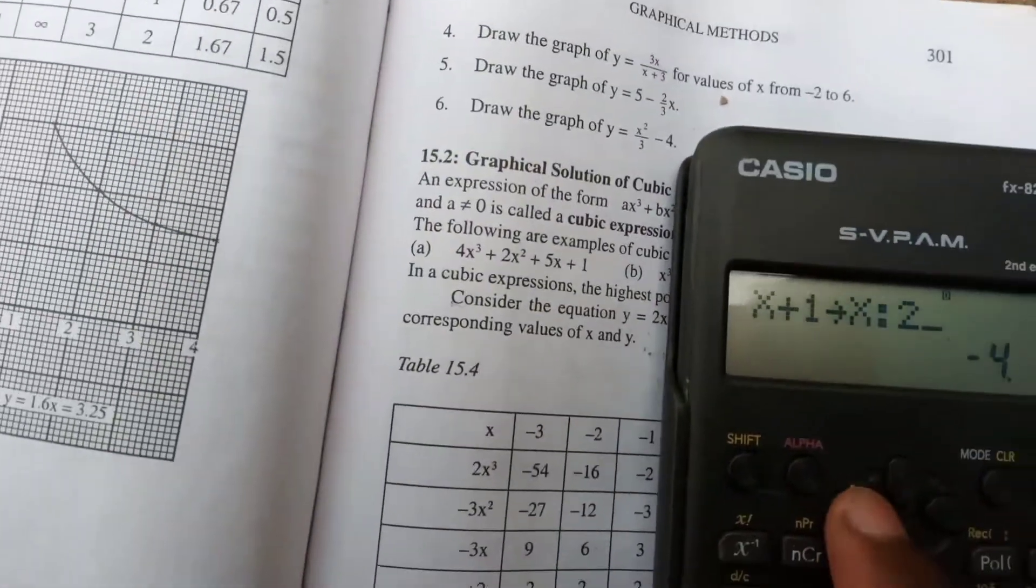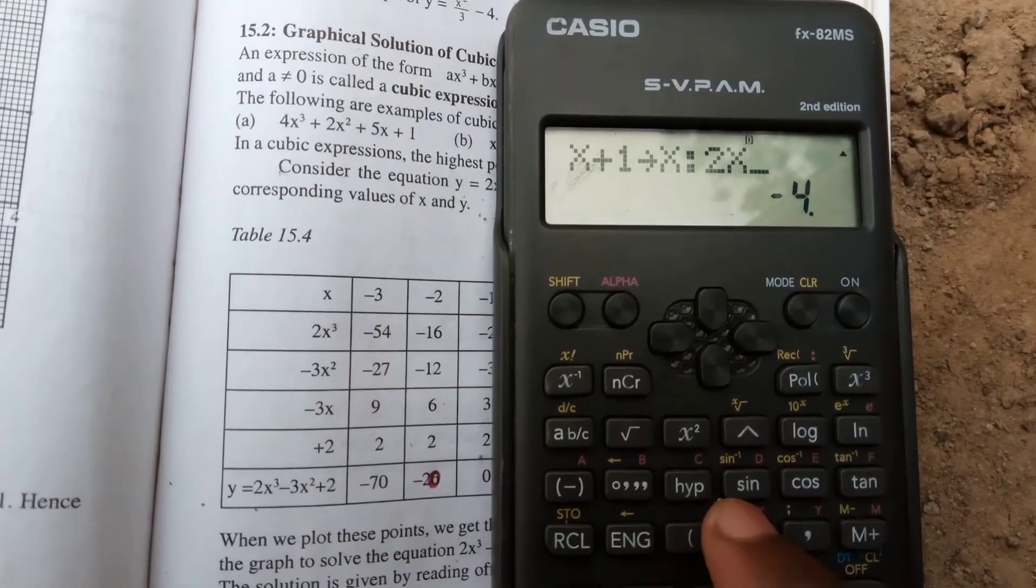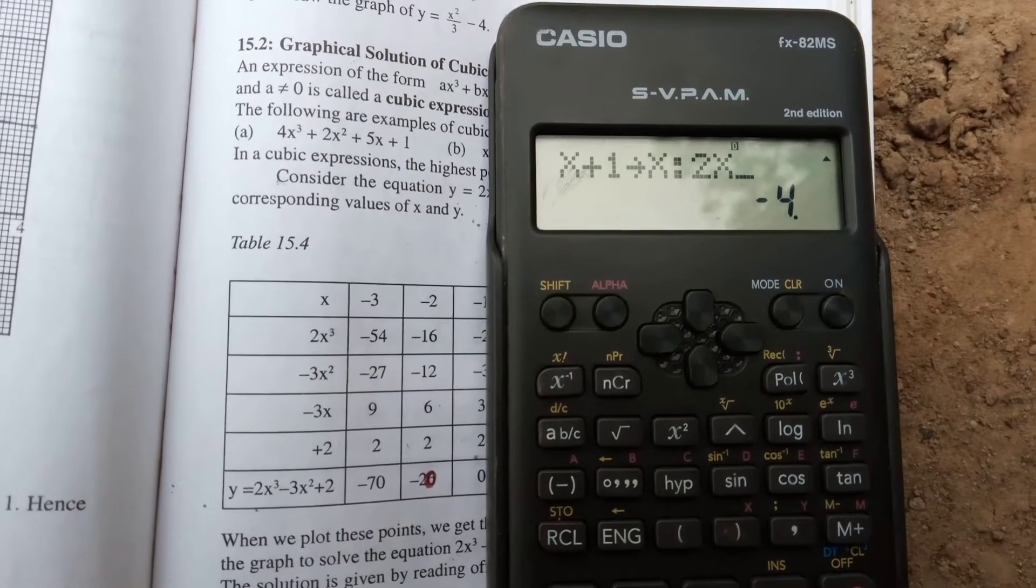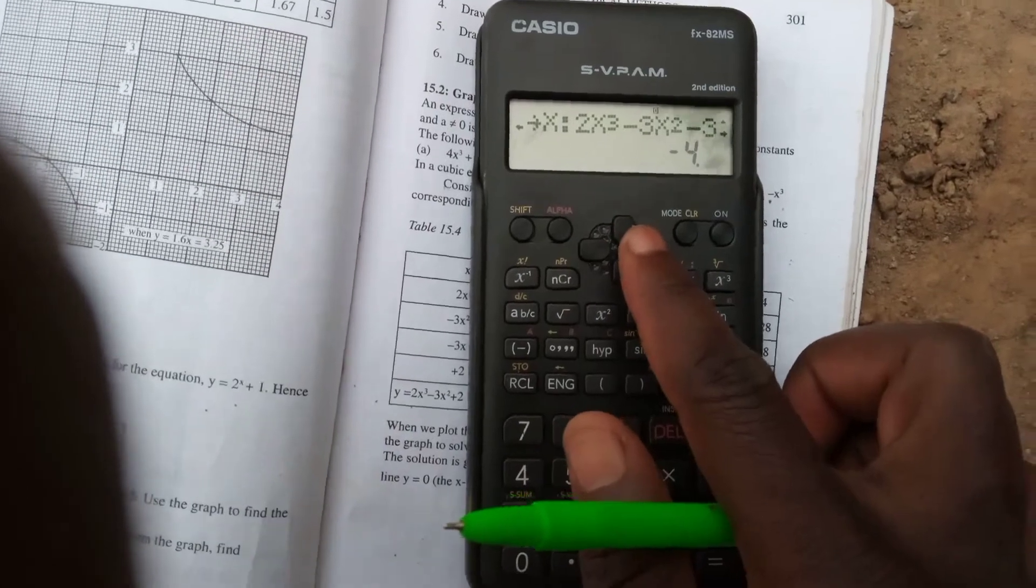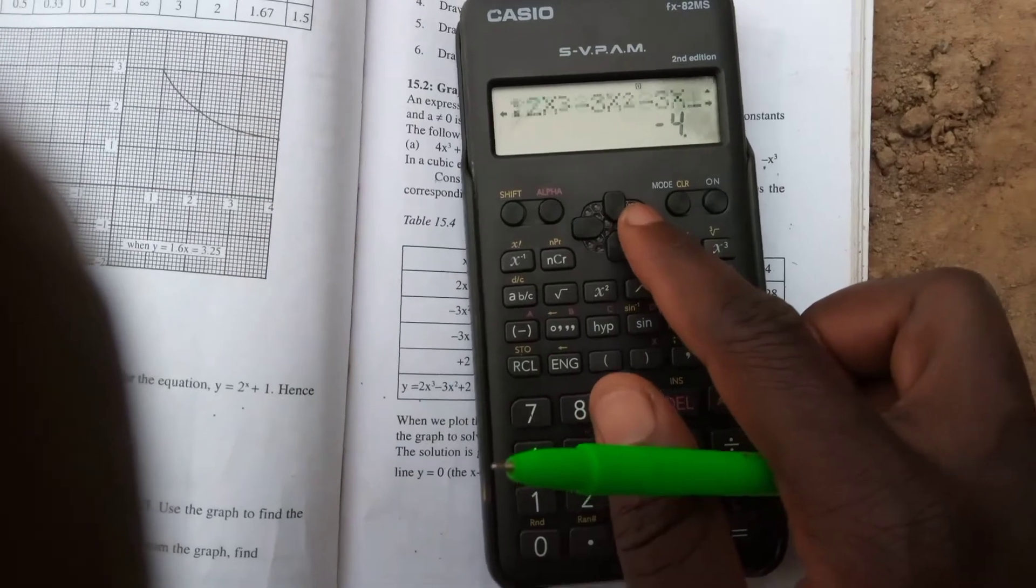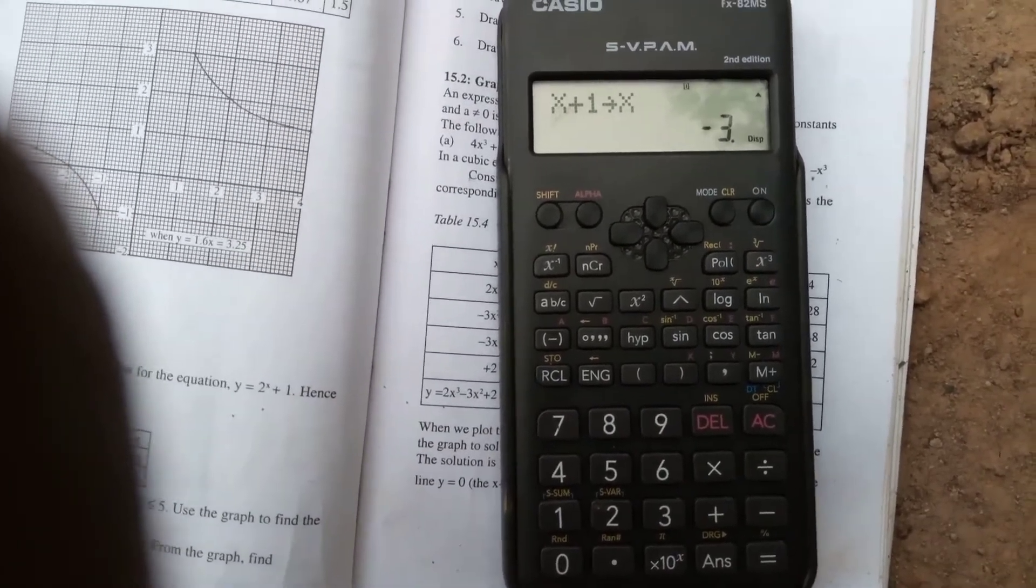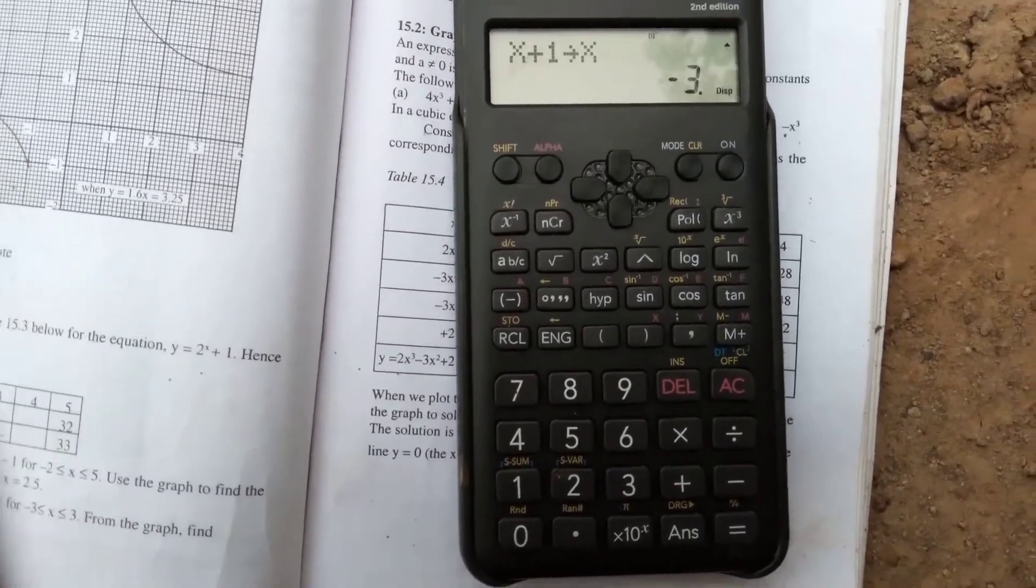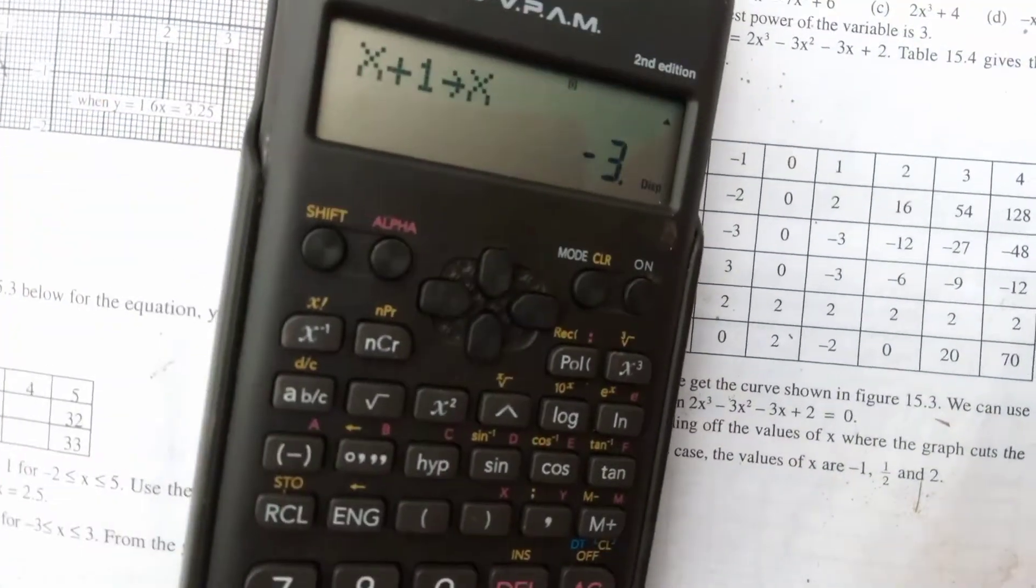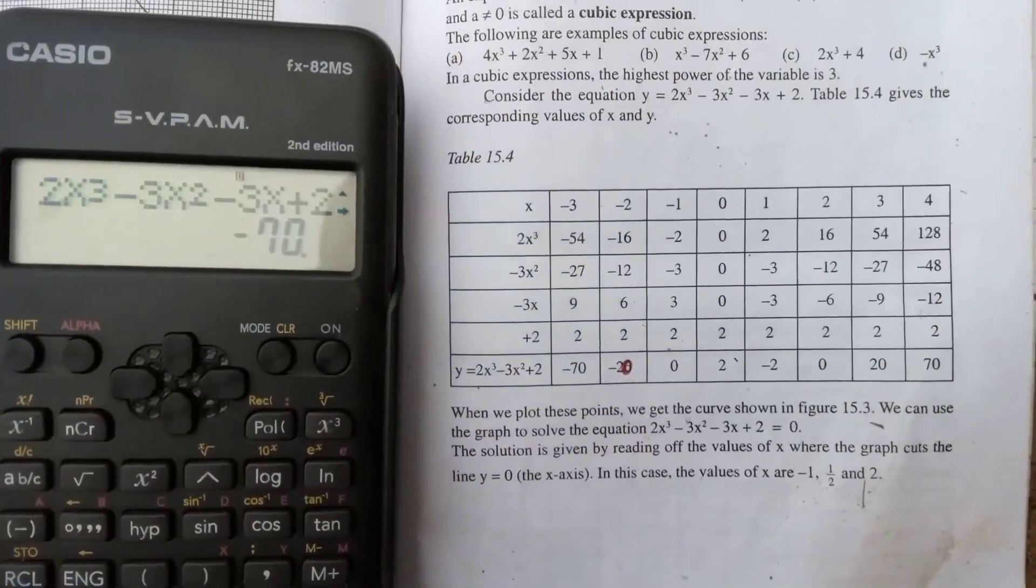So it's 2x cubed minus 3x squared minus 3x plus 2. When you press equal sign the first time, it will give you the first value of x, that is negative 3. If you press equal sign the second time, it will give you the first value of y, which is negative 70.